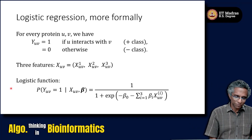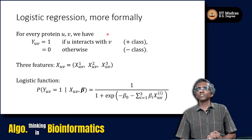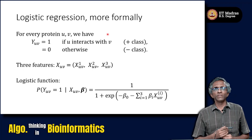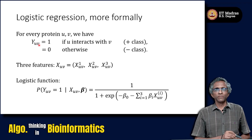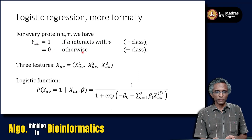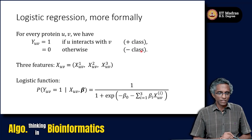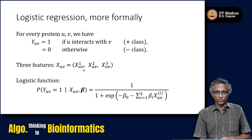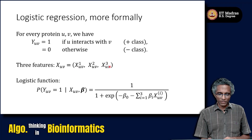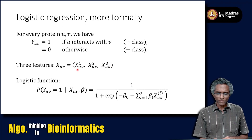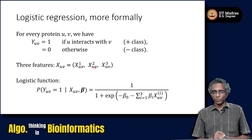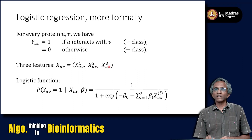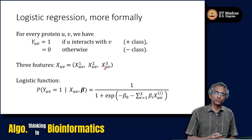More formally, in logistic regression, for every pair of proteins you have a random variable Y_UV which is 1 if U interacts with V and 0 otherwise — this is the positive or negative class. For every pair of proteins you also have three features: X_UV1, X_UV2, and X_UV3. These correspond to the number of experimental studies in which the interaction is observed, the Pearson correlation coefficient of the corresponding genes, and the small world clustering coefficient capturing shared neighbors between proteins U and V.